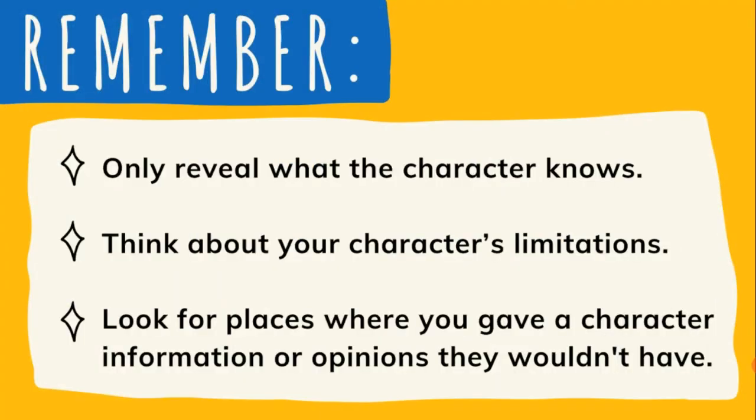You'll want to occasionally go back through your writing to make sure you're only revealing what the character actually knows. Think about your character's limitations too. This is especially important in first person point of view as you're seeing the world through their eyes, not another character or yourself. So keep an eye out for places where you may have accidentally given a character information or opinions they wouldn't normally have.